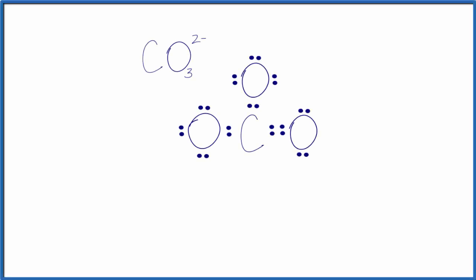To draw the resonance structures for CO3 2- (the carbonate ion), we start with a valid Lewis structure. We can see each of the atoms has an octet here, and we're using only the valence electrons that we have for this structure.